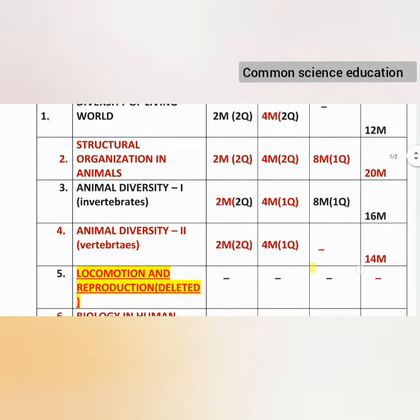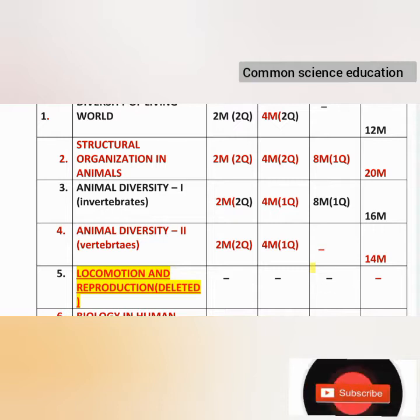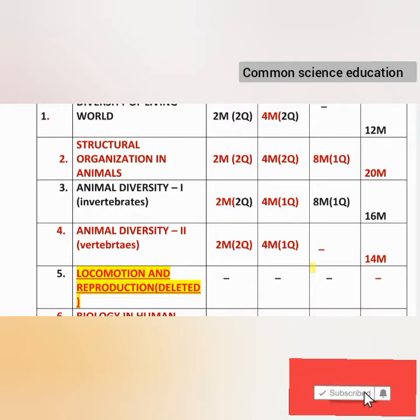Animal Diversity 1 — Invertebrates: 2 marks, 2 questions; 4 marks, only 1 question; and 8 marks, 1 question. Total 16 marks.